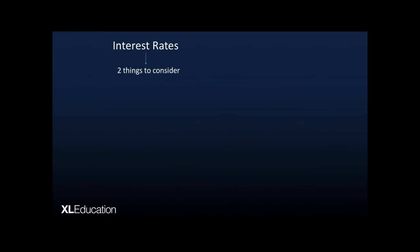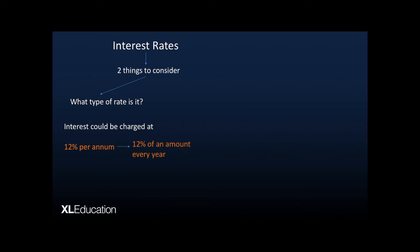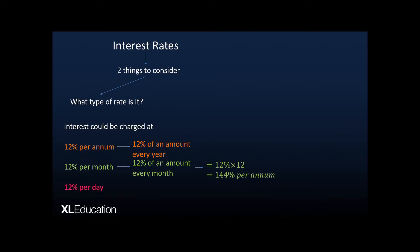Interest rates are very interesting and for them there are two things we have to consider. One is what type of rate is it? Interest could be charged at 12% per annum, which means a certain percentage of the overall amount is charged every year, or it could be 12% per month, which means 12% is charged every month — similar to 144% per annum — or you could even have a daily interest rate.